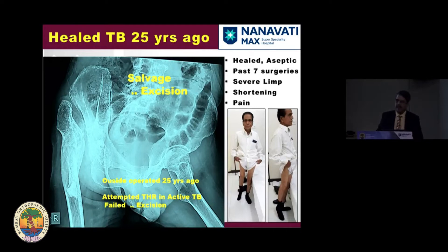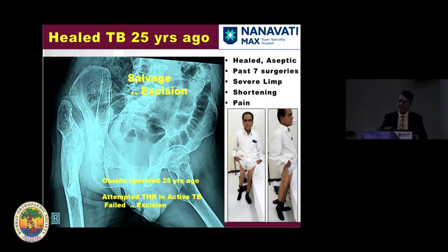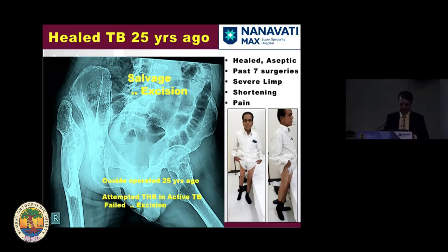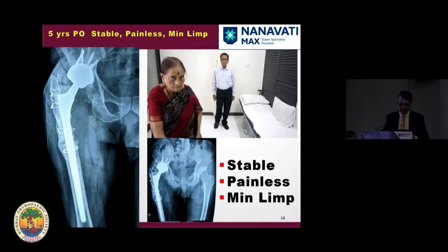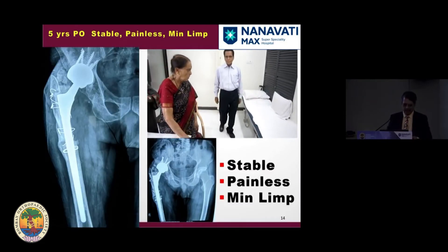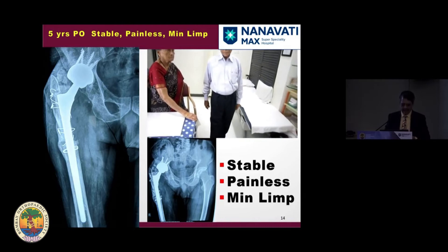Here is a healed TB example: 25 years ago this patient had a Girdlestone excision arthroplasty. He was limping with severe shortening — it was an active TB case where everything had failed. There was no sinus, but severe shortening. We performed THR with post-operative anti-TB medication, and he is now walking actively with a good reconstruction.